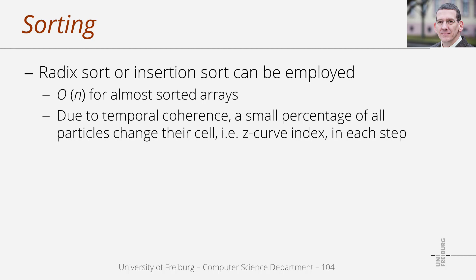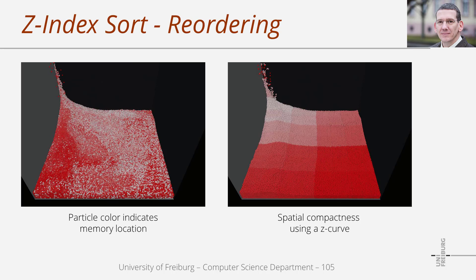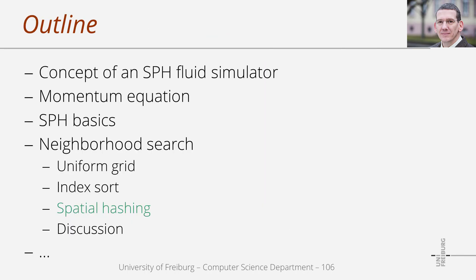Another interesting aspect is the sorting algorithm itself. We typically employ variants of radix sort or insertion sort. Insertion sort is very efficient for almost sorted arrays, and due to temporal coherence only a small portion of particles change their cells per simulation step. Here we see two illustrations of a particle fluid where the color indicates the memory location. On the left, an unsorted particle array is used; on the right, particles are stored with respect to a space-filling curve. Computations on the sorted particles are much more efficient.